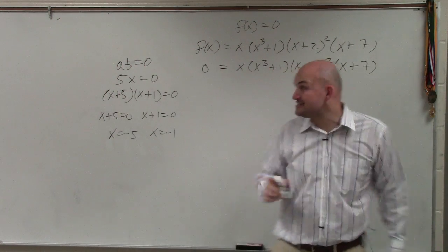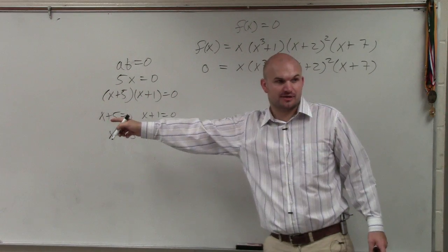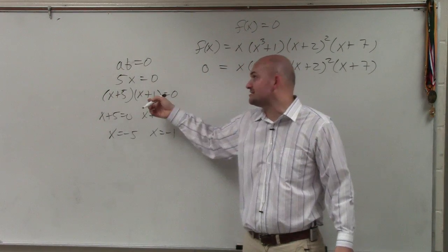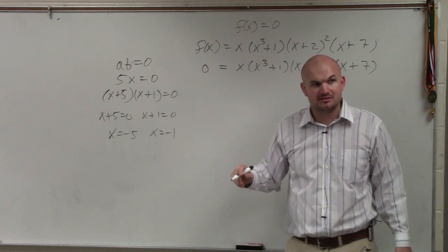So when x equals negative 1, that makes that 0. Therefore, the whole equation is 0, or the whole expression. When you use negative 5, plug negative 5 over there, that makes that 0. 0 times that is 0. It makes it true. So both of those are solutions. Does that make sense?